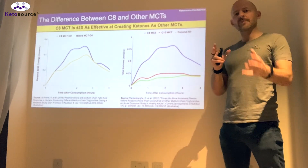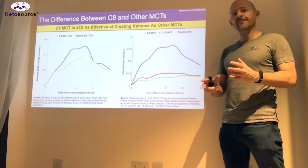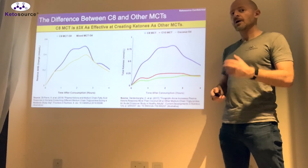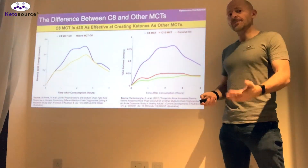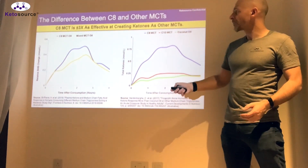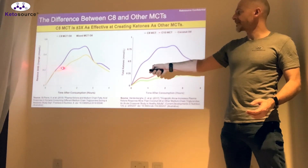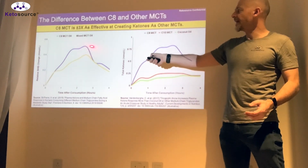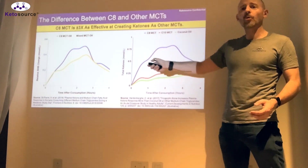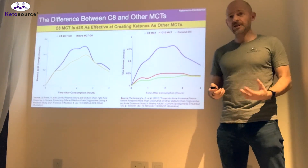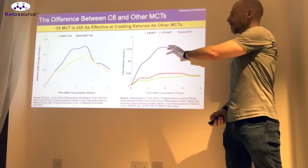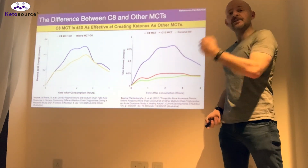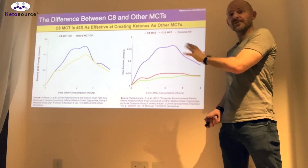Typically you'll have maybe 60% C8 and 40% C10, or some other combination — some have up to 6% or 8% C12 as well. What we see here is the mixed MCT oil doesn't get quite as high, while C8 gets up to around 0.5 millimole in beta-hydroxybutyrate. So that's the first takeaway: C8 versus the standard MCT oil you find in shops produces a noticeably higher result.